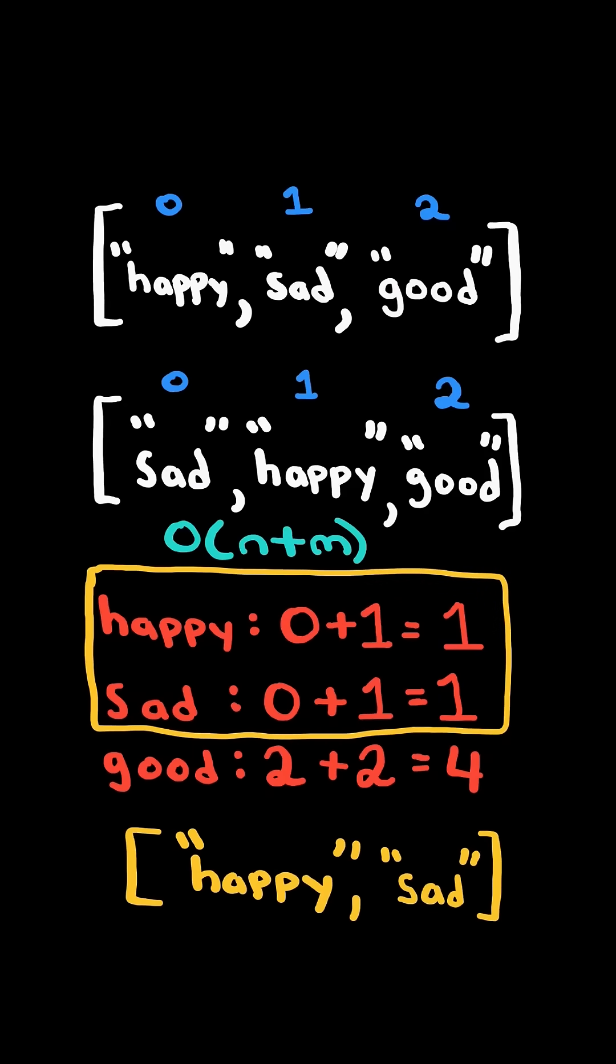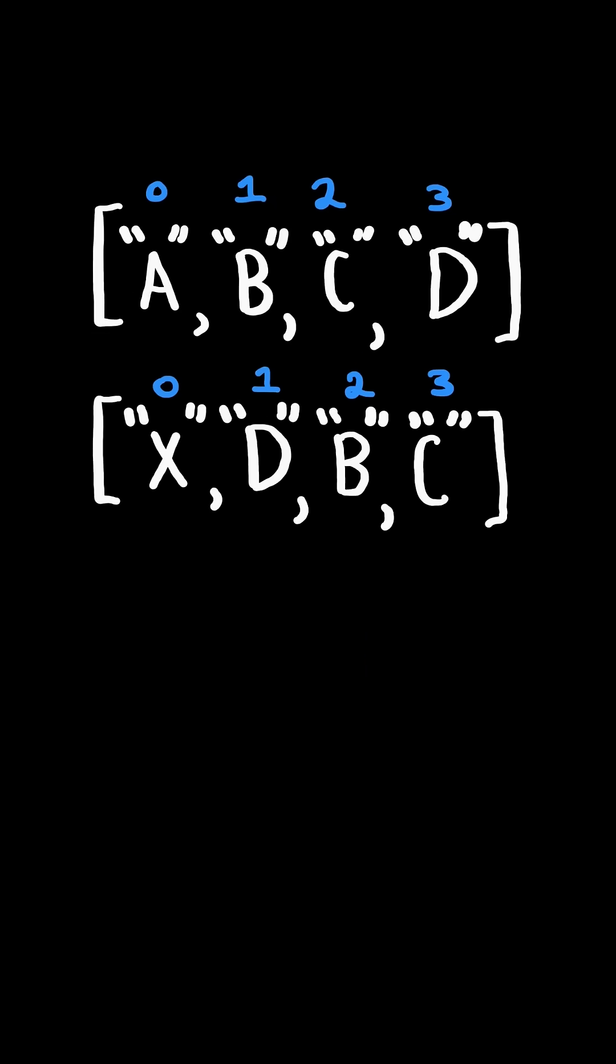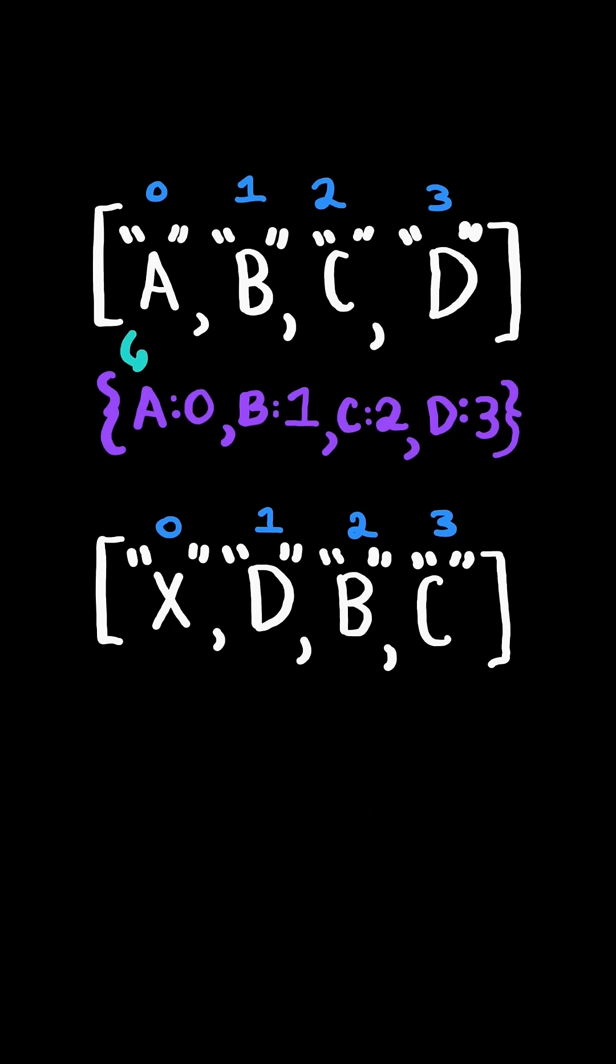We will solve this in O of the length of list 1 and list 2 time. Consider this new example. First, we create a map of list 1, mapping the word to its index.